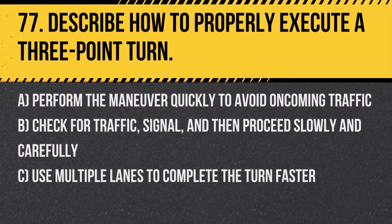Question 77: Describe how to properly execute a three-point turn. A. Perform the maneuver quickly to avoid oncoming traffic. B. Check for traffic, signal, and then proceed slowly and carefully. C. Use multiple lanes to complete the turn faster. Answer: B. Check for traffic, signal, and then proceed slowly and carefully. A three-point turn must be done safely, ensuring the road is clear.